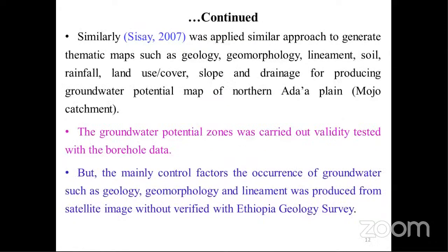Similarly, a 2007 study applied a similar approach to generate thematic maps such as geology, geomorphology, lineament density, soil, landfall, land use/land cover, slope, and drainage for producing a groundwater potential map of northern Adapley mojo catchment in Ethiopia. The groundwater potential zones were widely tested with borehole data, but the main controlling factors of groundwater occurrence — geology, geomorphology, and lineament density — were produced from satellite imagery without verification by hydrogeological survey.